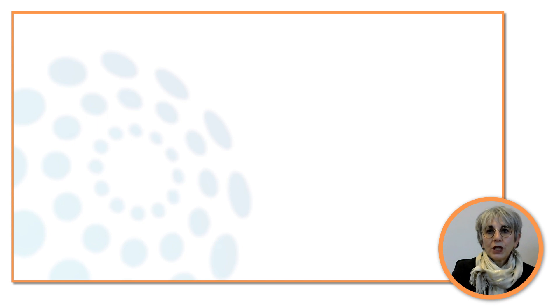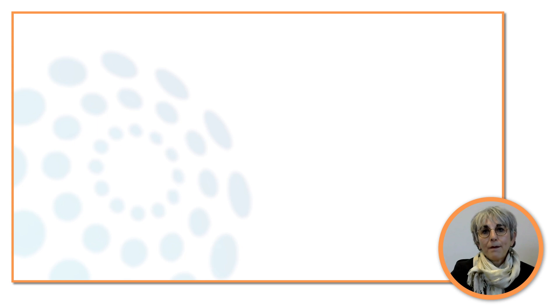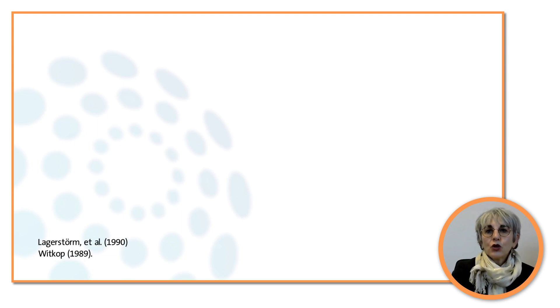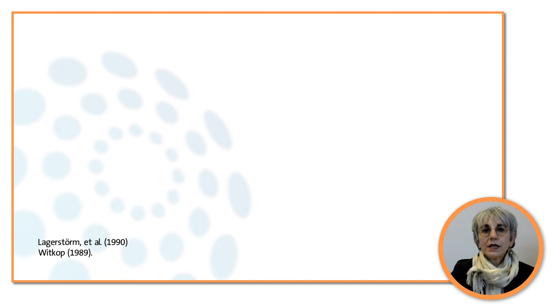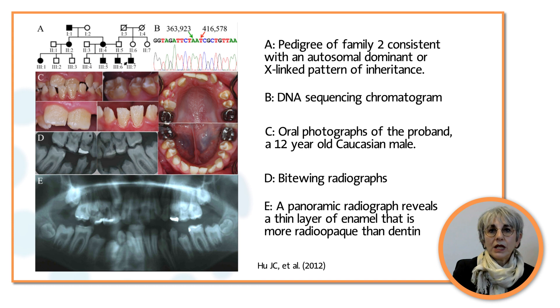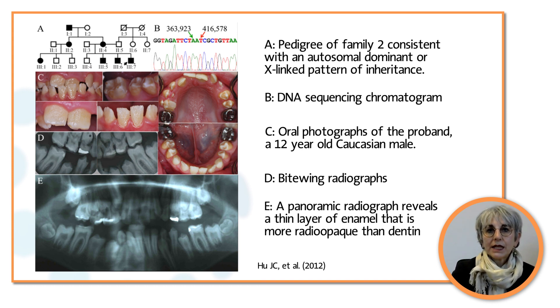Since the discovery of the first gene underlying amelogenesis imperfecta — from mapping of AMELX in 1989 to its causative role in amelogenesis imperfecta in 1990 — more than 70 genes have been discovered as most important for amelogenesis and its defects.